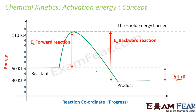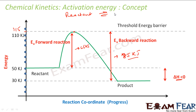For an equilibrium reaction, there is a forward activation energy and a backward activation energy. The backward activation energy equals the threshold barrier minus the energy of the product. In this case: forward Ea = 115 − 50 = 65 kJ, and backward Ea = 115 − 30 = 85 kJ. The activation energy of the forward reaction is less than the backward reaction, which is why the reaction moves in the forward direction — you need more energy to push the reaction backward.